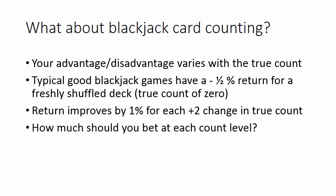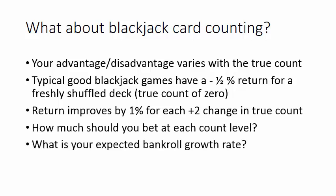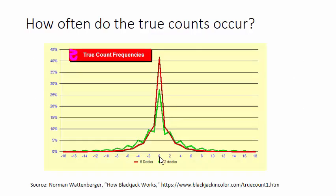How much should you bet at each count level, and what is your expected bankroll growth rate? This graph shows the frequency that each count value occurs as a percentage of time on the left side. The red line is for six decks and the green is for two decks. I'll focus on the six deck situation — the two deck will be similar. This graph was generated by simulation by Norman Wattenberger. Go to his website to see how the simulation was done.